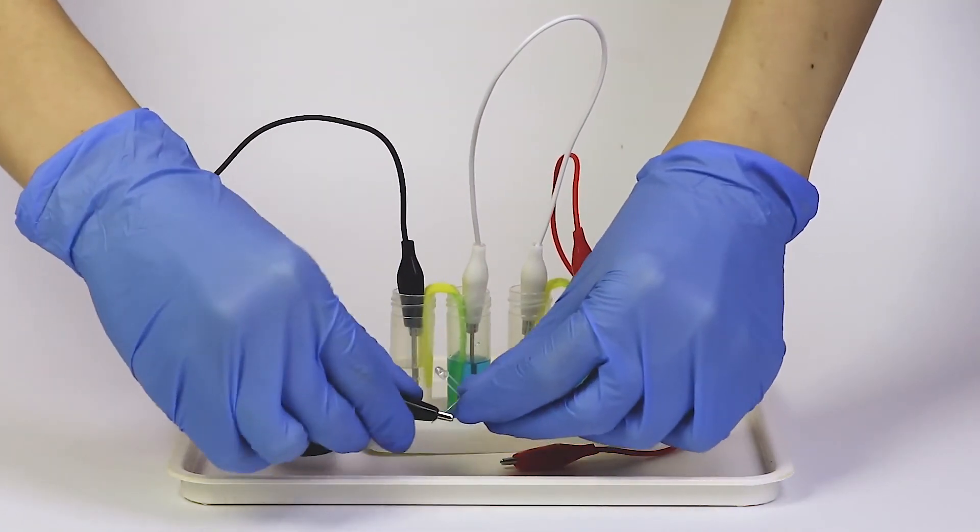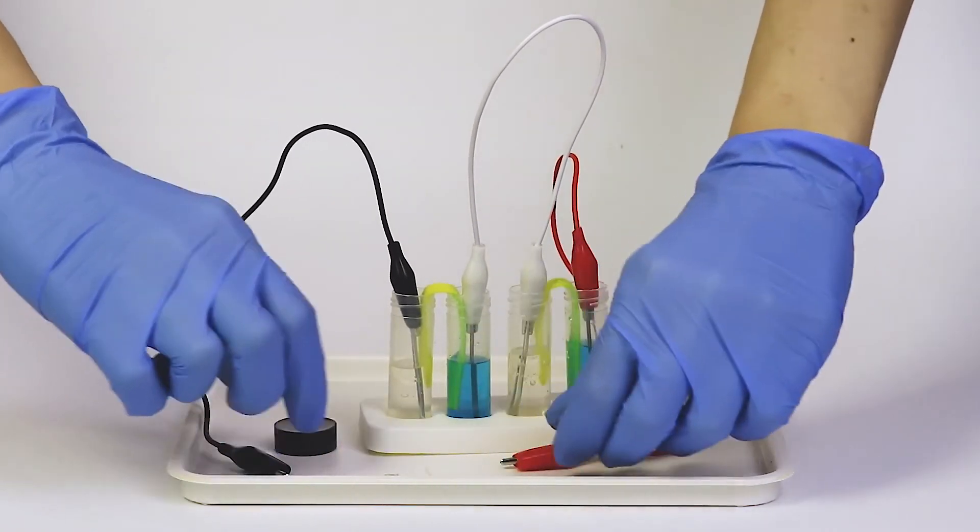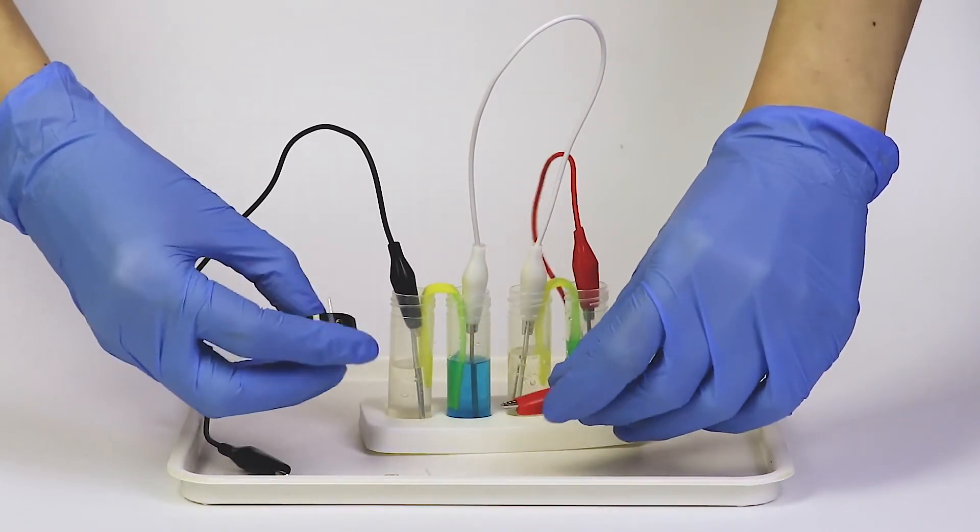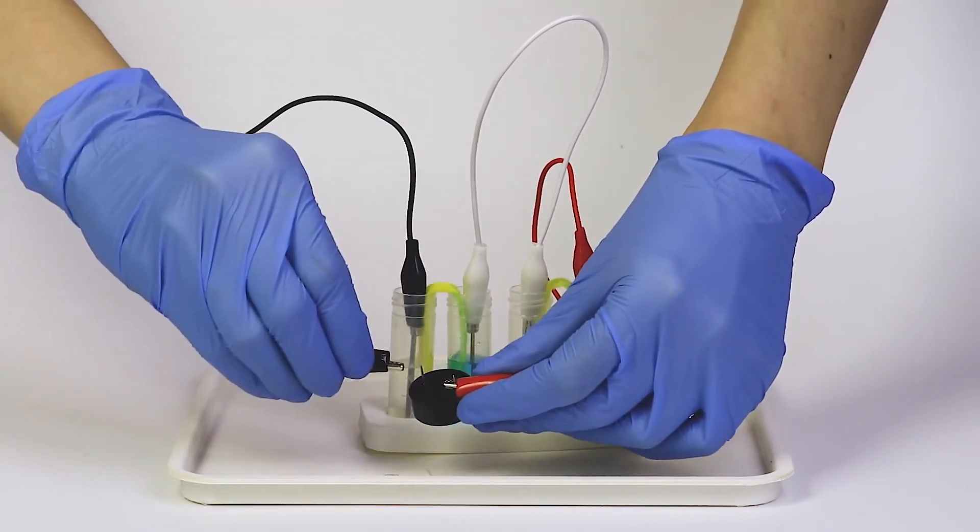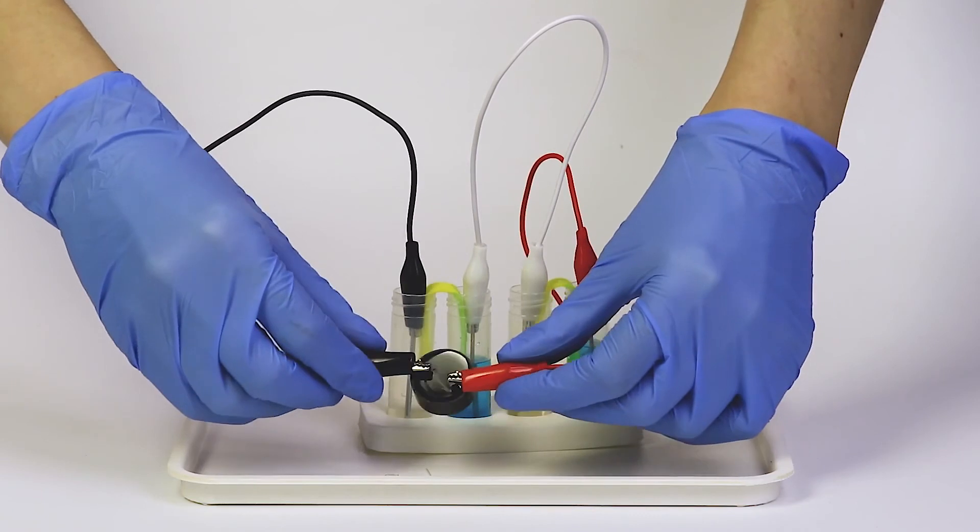By connecting an LED or a buzzer, we loop the electrical circuit. Electrons start flowing from the more active metal, zinc, towards the less active metal, for example copper.